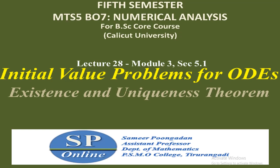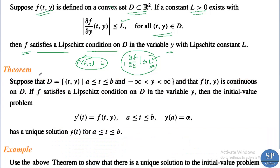Hello everyone. Today we are going to discuss the existence and uniqueness of the solutions of first order initial value problems. We can discuss the existence and uniqueness theorem of the solution of an initial value problem. Suppose that D equals the set of all (t, y) such that a ≤ t ≤ b and -∞ < y < ∞, and that f(t, y) is continuous on D. If f satisfies the Lipschitz condition on D in the variable y, then the initial value problem y'(t) = f(t, y), t in [a, b], y(a) = α has a unique solution y(t) for a ≤ t ≤ b.